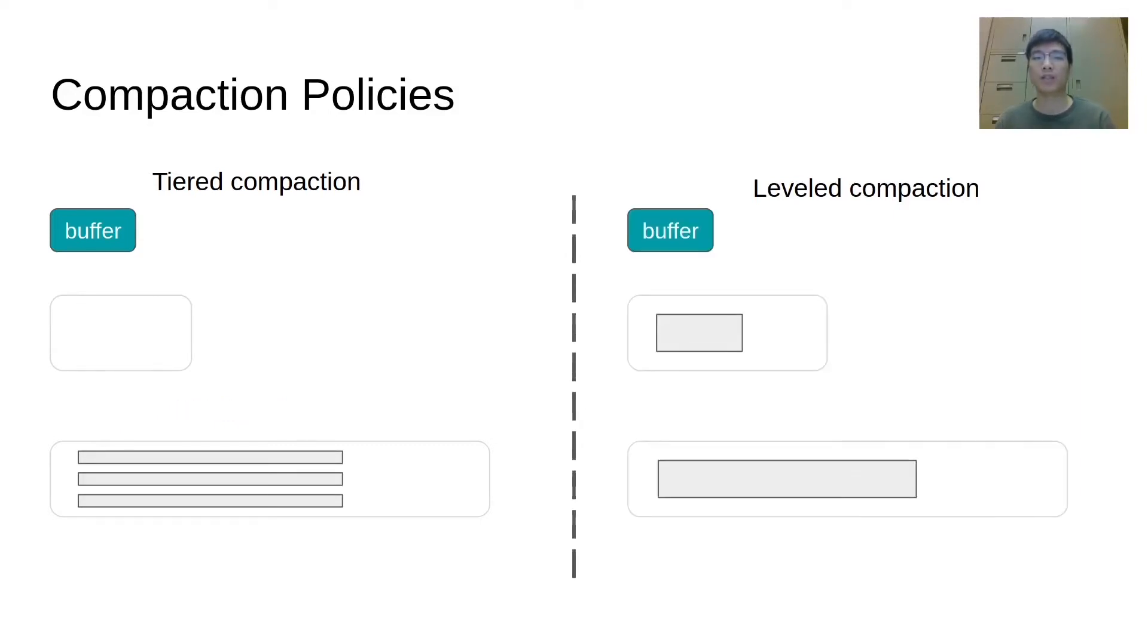In leveled compaction, each level has exactly one sorted run. Updates from a previous level will be merged to form a new run. When the size of the run reaches a threshold, it will be flushed and merged with the run in the next level. Because leveled compaction aggressively sort-merges updates with existing data, the data in each level will be rewritten multiple times. On the other hand, by accumulating updates in a level and sort-merging them at once, the tiered compaction has a lower insert cost.